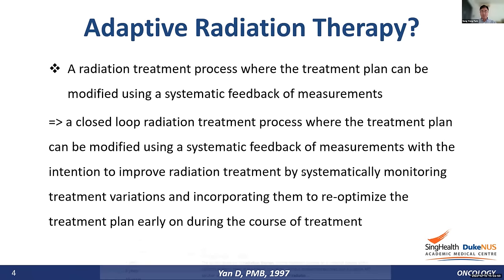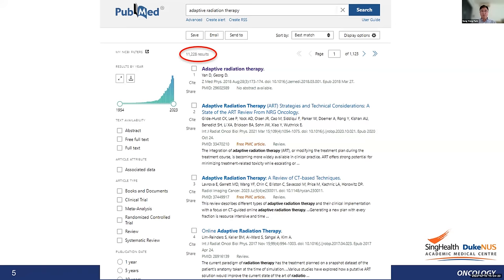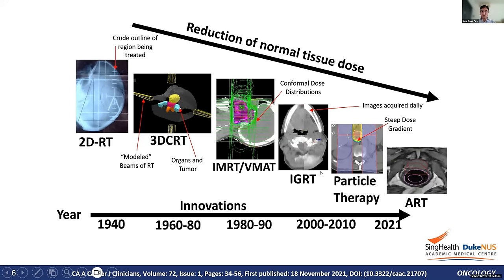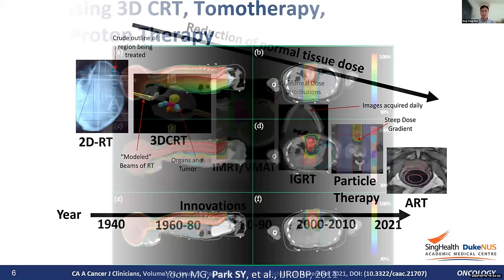According to a definition from William Beaumont Hospital, adaptive radiation therapy is a closed-loop radiation treatment process where the treatment plan can be modified using systematic feedback of measurements, with the intention to improve radiation treatment by systematically monitoring treatment variations and incorporating them to re-optimize the treatment plan early or during the course of treatment. A PubMed search for 'adaptive radiation therapy' yields over 11,000 papers.